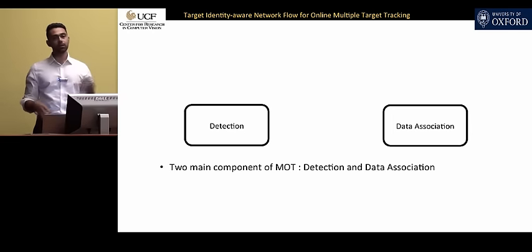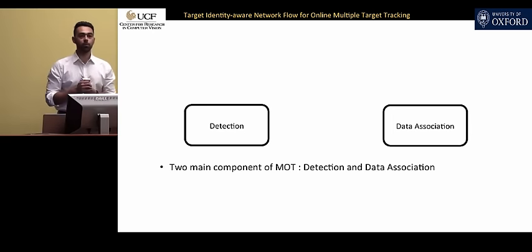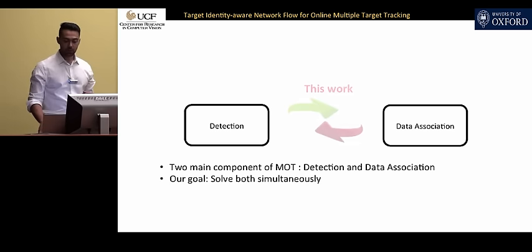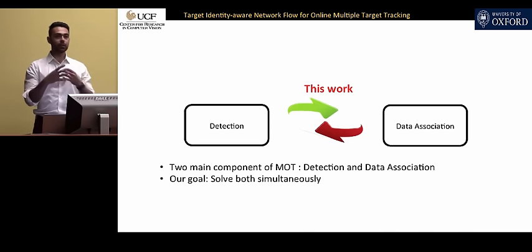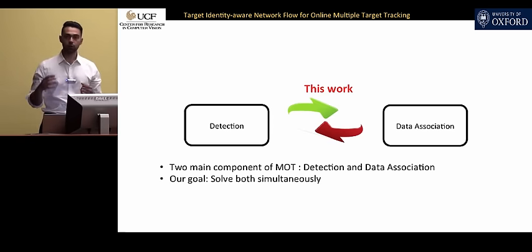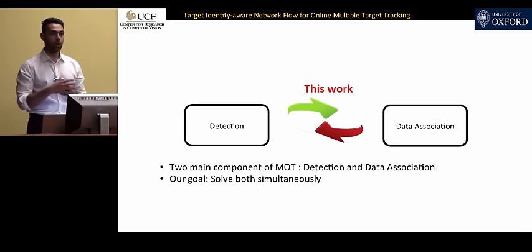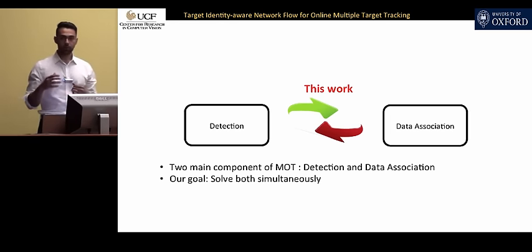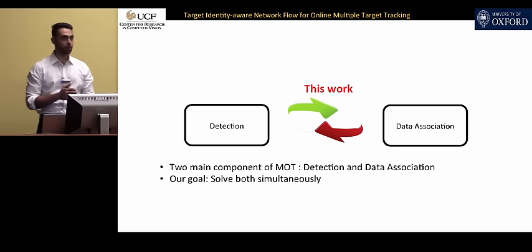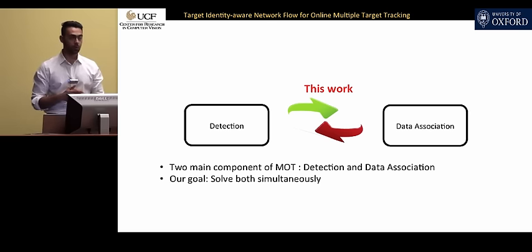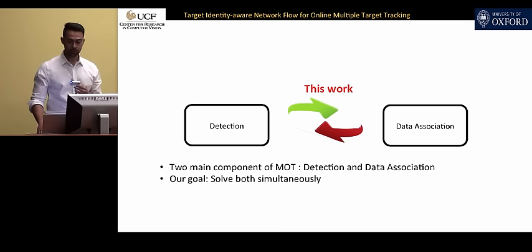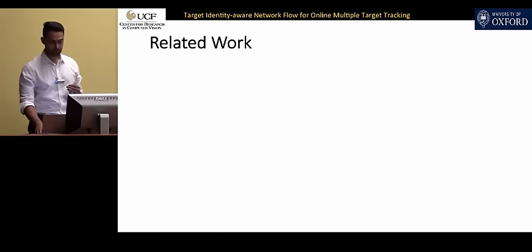Considering detection and data association as two major components of multiple object tracking, in this work we are bringing them into a single pipeline and trying to solve them simultaneously, not as two separate problems. Thus we propose a tracker that works well for sequences where a pre-trained object detector works well, but also for sequences where it fails, like the ones shown earlier.